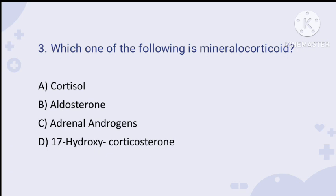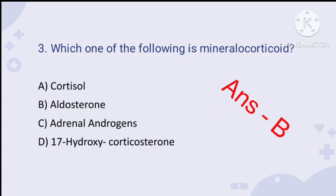Question number three: which one of the following is a mineralocorticoid? This is a very important and most expected question for the KSET exam. The right answer is aldosterone — it is the best example of a mineralocorticoid. The other options (A, C, D) are glucocorticoids, produced by the adrenal cortex.